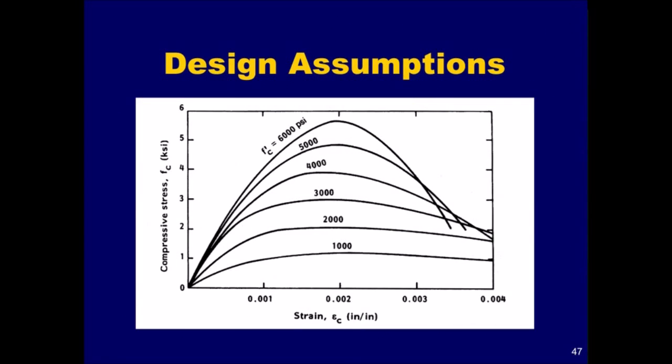The need for the beta-1 factor is caused by the variation in the shape of the stress-strain curve for different concrete strengths, as shown in this figure. For concrete strengths up to 4000 psi, the shape and centroid of the actual concrete stress block can be reasonably approximated by a rectangular stress block with a uniform stress of 0.85 f'c and a depth of 0.85 times the depth to the neutral axis. That is, the approximation is made with beta-1 equal to 0.85.